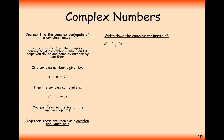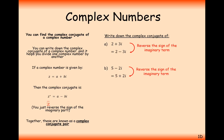So writing down the complex conjugate of 2 plus 3i, that would just be 2 minus 3i. We're going to use this in dividing complex numbers later on. 5 minus 2i will have a complex conjugate of 5 plus 2i. And 1 minus i root 5 would have a complex conjugate of 1 plus i root 5.